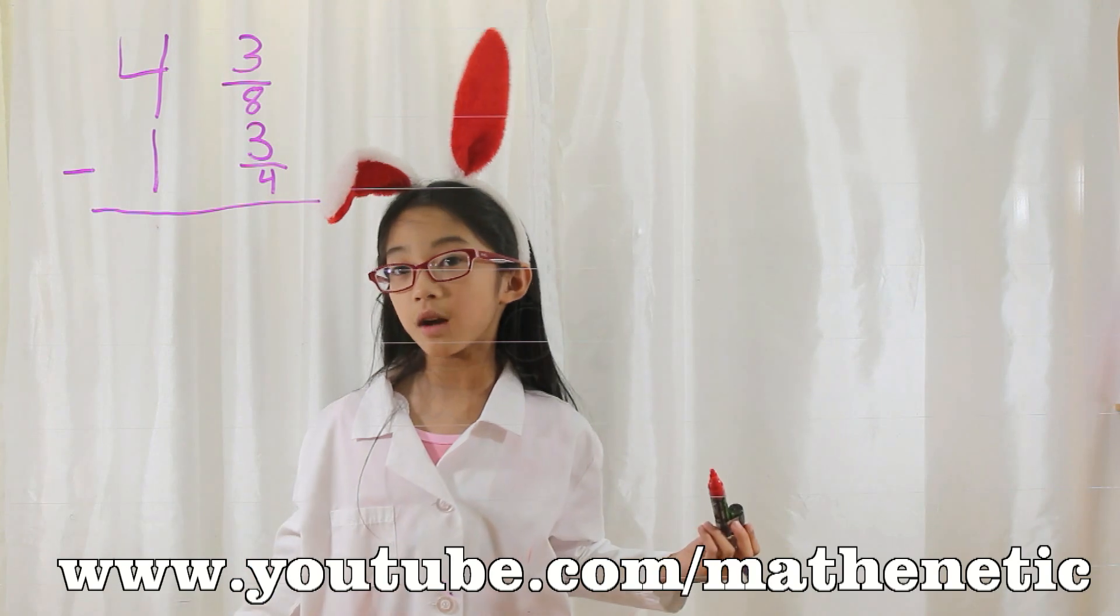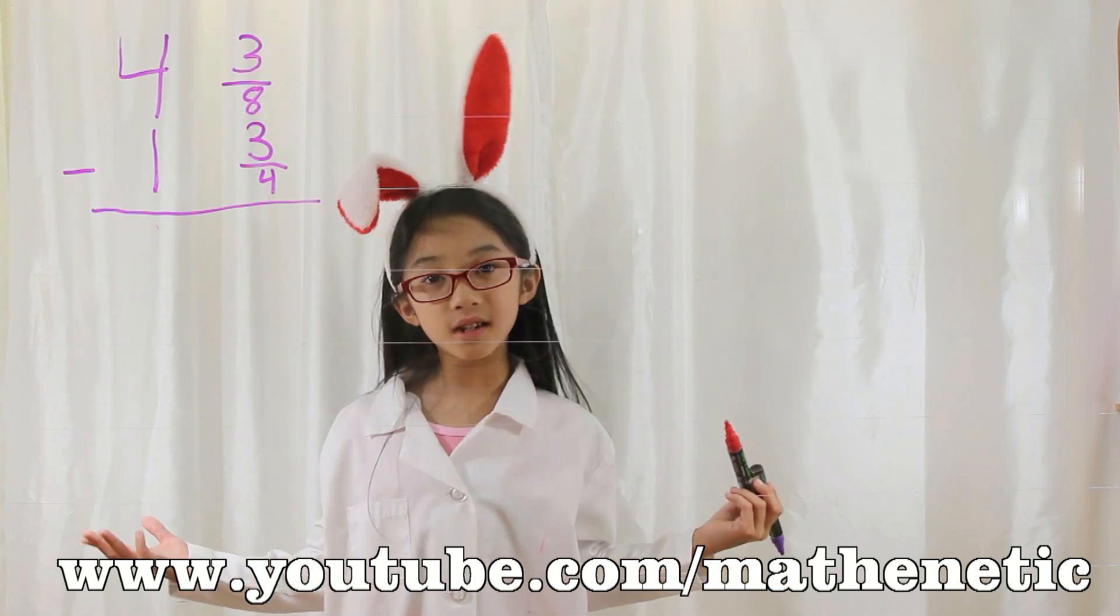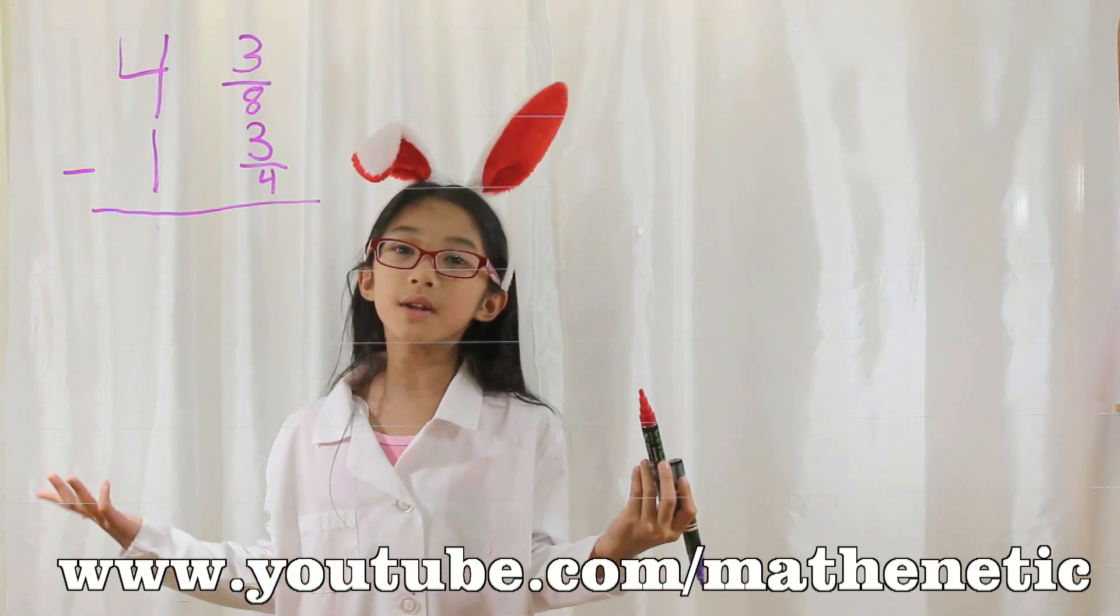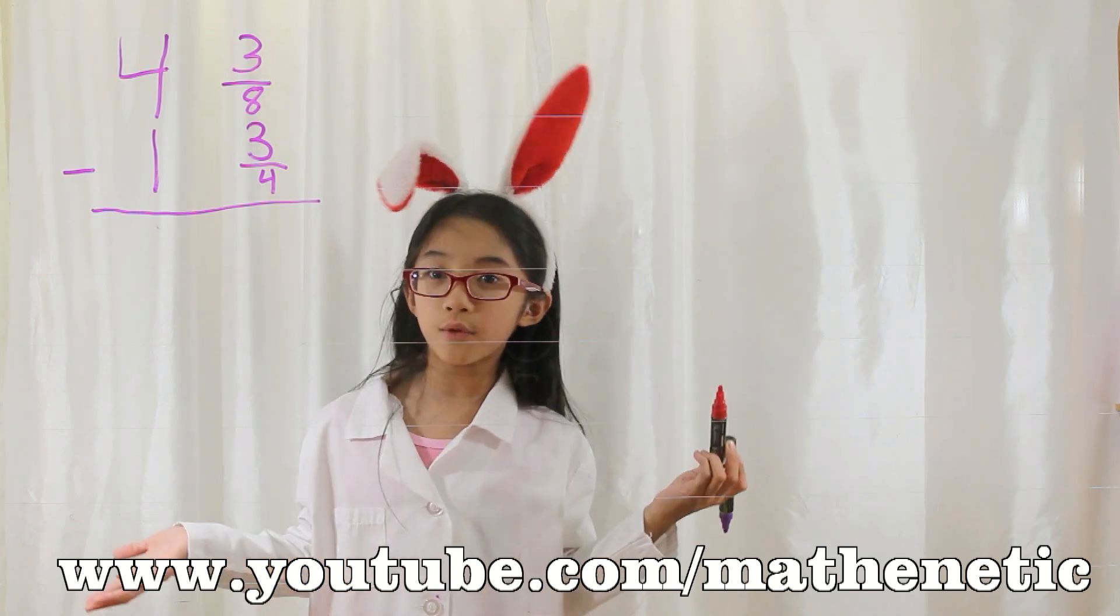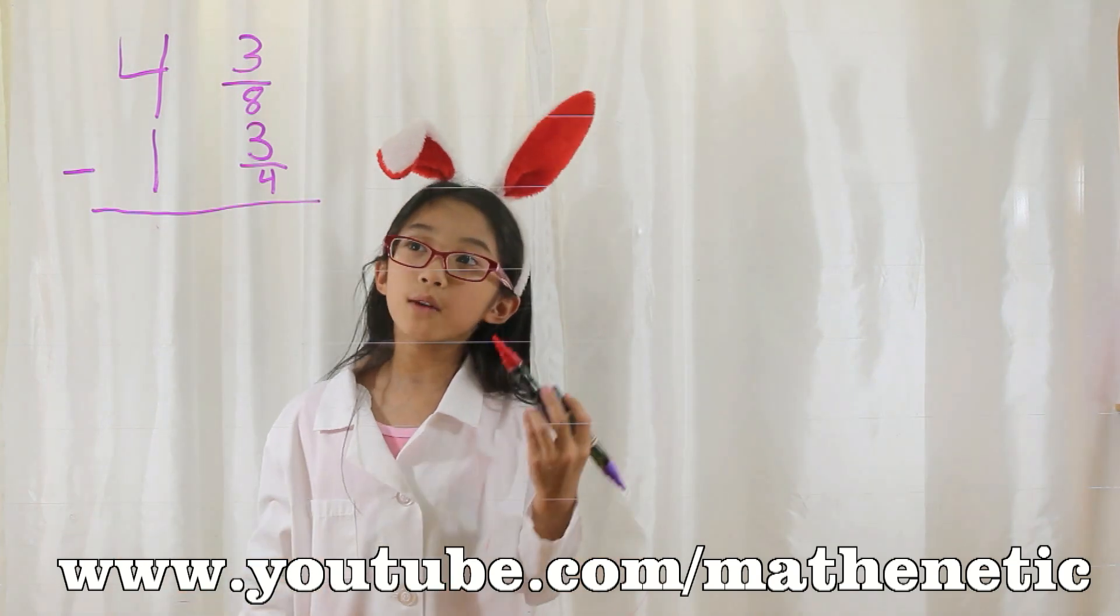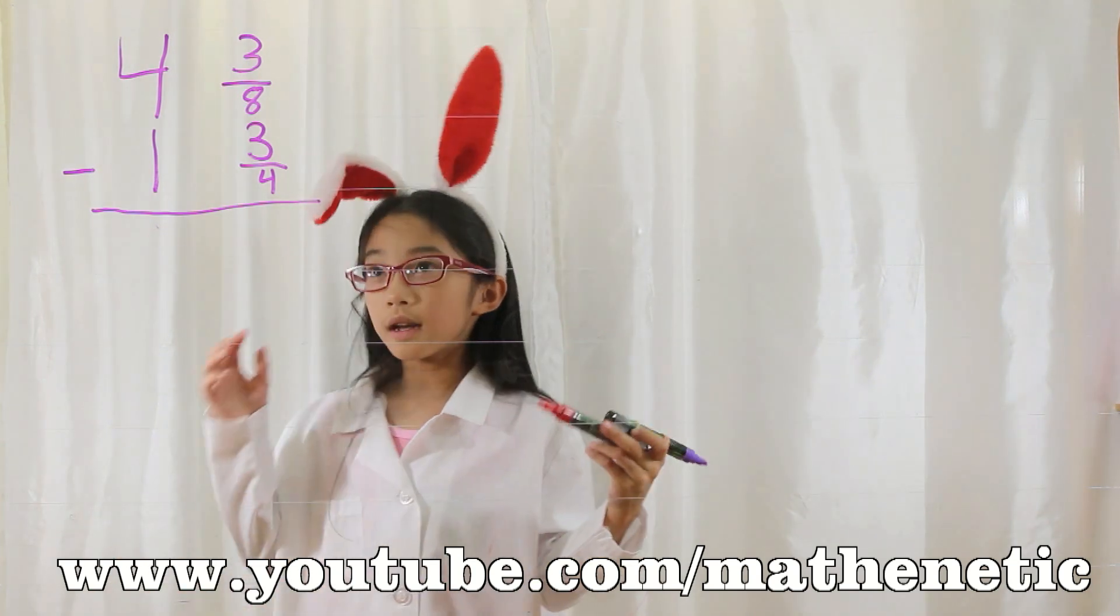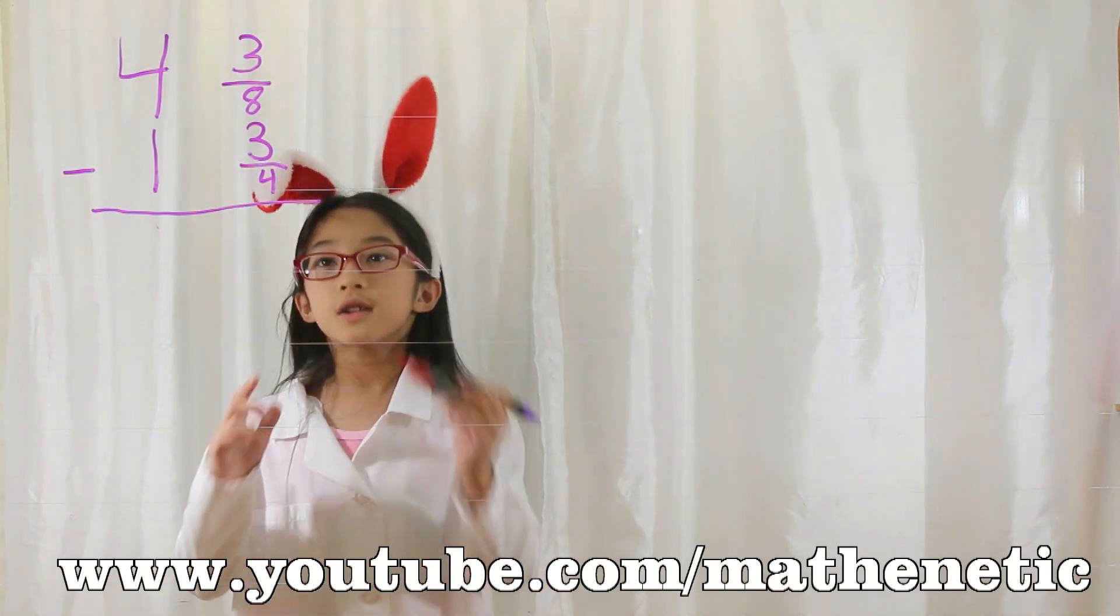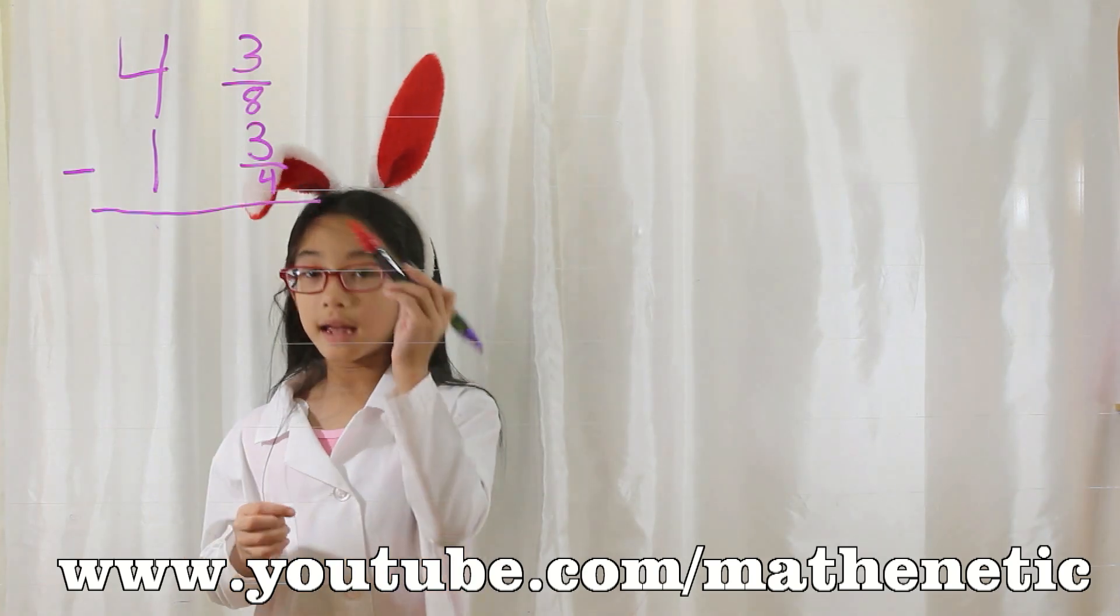But what is a common denominator? A common denominator is when you have two or more fractions that share the same denominator. Like, for example, 3 eighths and 3 fourths. They don't have a common denominator, so we need to make one. How? You have to multiply 3 fourths times 2 over 2, because 4 times 2 would be 8. 8 is equal to 8.